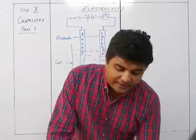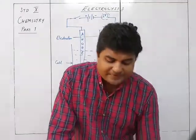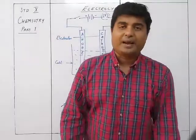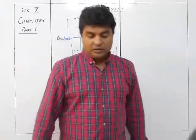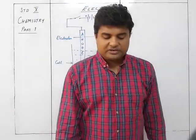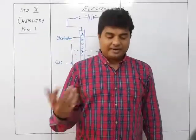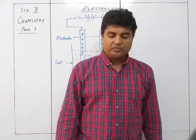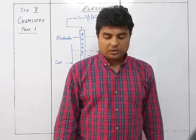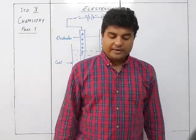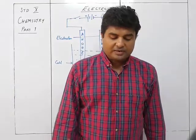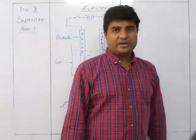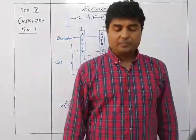So decomposition of electrolyte like NaCl gives Na⁺¹ and Cl⁻¹. At the anode, Cl⁻ loses an electron to become Cl — that is oxidation. At the cathode, Na⁺ gains an electron to become Na — that is reduction. Electrolysis involves a chemical change and is hence a redox reaction, with oxidation and reduction taking place simultaneously.